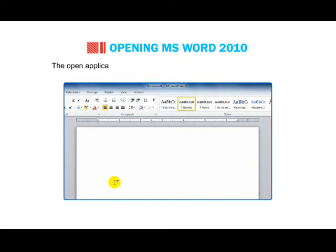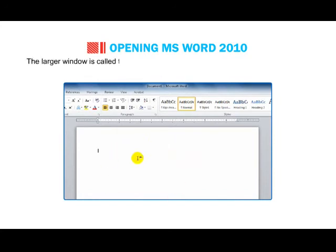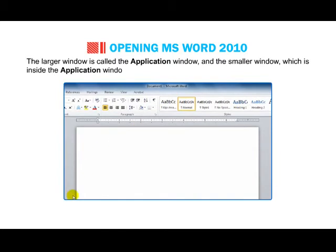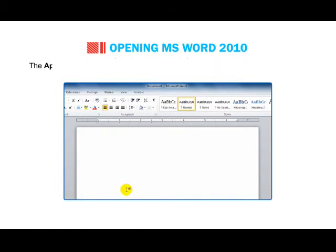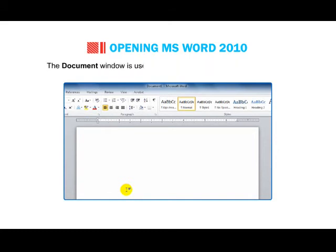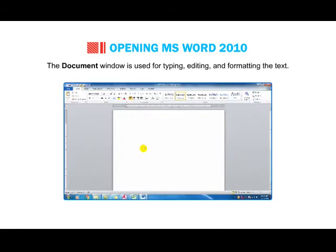The Insertion Point indicates the position where the typed character will appear. The open application of MS Word displays two windows on the screen. The larger window is called the Application Window and the smaller window inside it is called the Document Window. The Application Window helps the user communicate with the MS Word program. The Document Window is used for typing, editing and formatting the text.